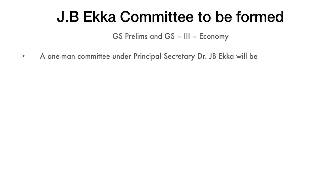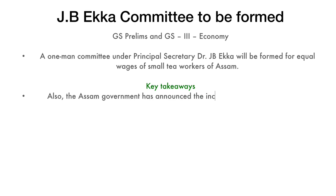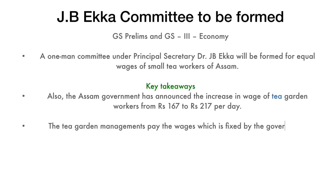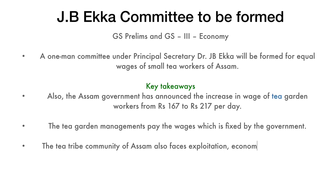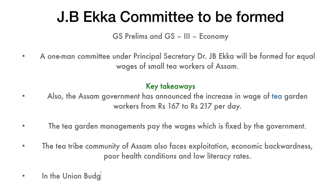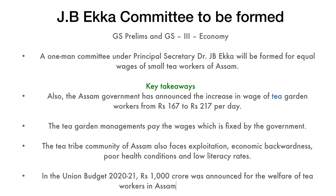The next headline is about the JB Ekka Committee to be formed. A one-man committee under Principal Secretary Dr. JB Ekka will be formed for equal wages of tea garden workers of Assam. The Assam government announced an increase in wages of tea garden workers from 167 rupees to 217 rupees per day. The tea garden managements pay the wages, which are fixed by the government. The tea tribe community of Assam also faces exploitation, economic backwardness, poor health conditions, and low literacy rates. In the Union Budget 2020-21, 1,000 crore rupees was announced for the welfare of tea workers of Assam and West Bengal.